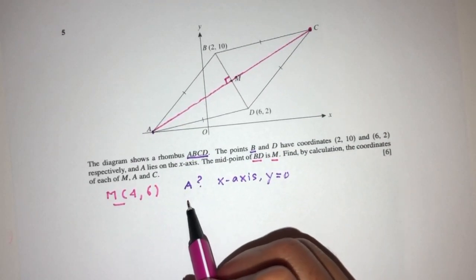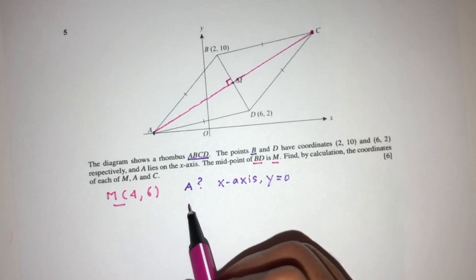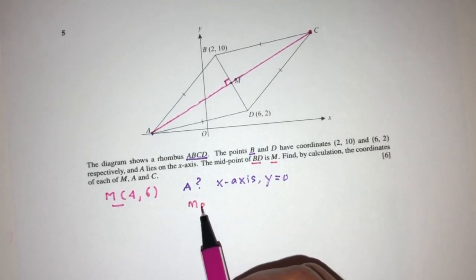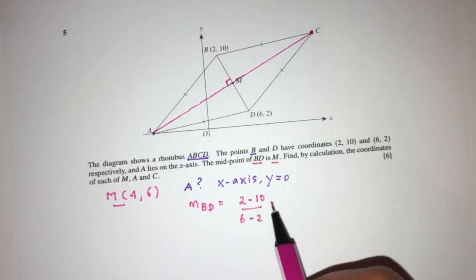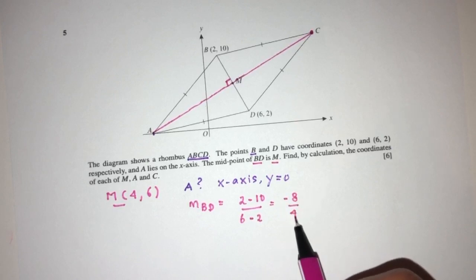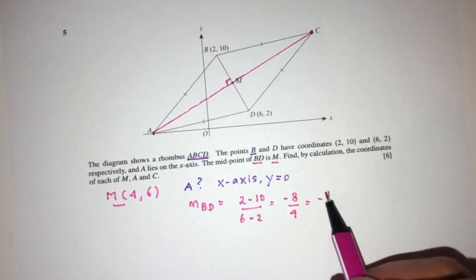So to find the line A, M, we have to find this gradient, and as we can see, we can first find the gradient of B, D. That will be simply Y2 minus Y1 over X2 minus X1. That should be minus 8 over 4, and that will be minus 2.